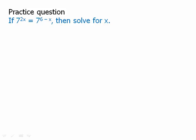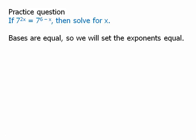Here's a practice question. Pause the video and then we'll talk about this. Okay, so those bases are already equal. We have a base of 7 on both sides of the equation. All we have to do is set the exponents equal and then solve. We'll add x to both sides, divide by 3, we get x equals 2.